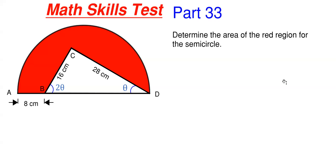This will be our 33rd part in this particular series. In this video we have to determine the area of the red region for the semicircle shown here. We are given that A to B is 8 centimeters, B to C is 16 centimeters, C down to D is 28 centimeters. For this overall white triangle, we have an angle of theta at D and 2 times theta at B.